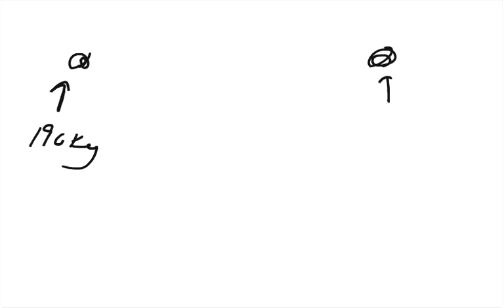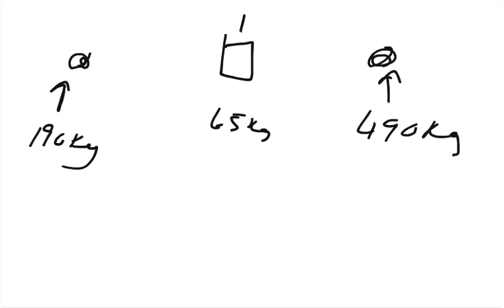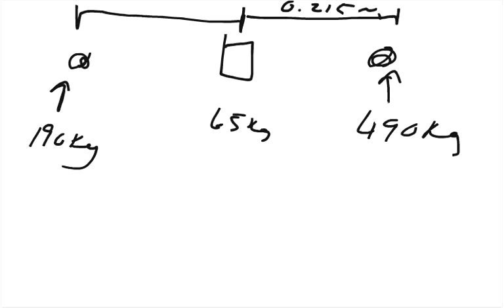We have this object here on this side — 190 kilograms — and this one over here is 490 kilograms. There's an object exactly right in the middle that weighs 65 kilograms. The distance from the midpoint to each object is half of 0.43, so it is 0.215 meters on each side. We need to figure out the gravitational pull of each of these.